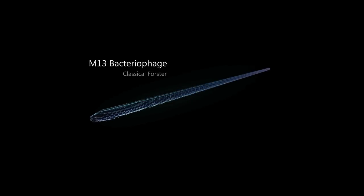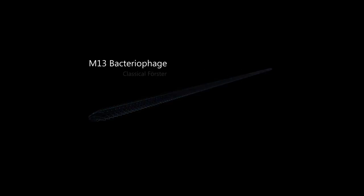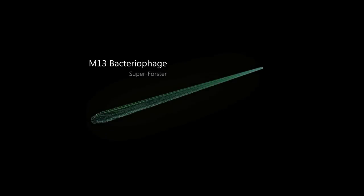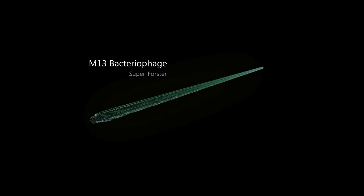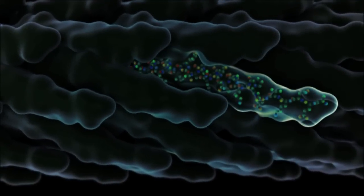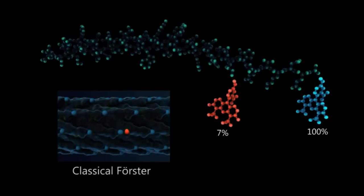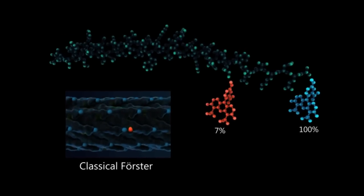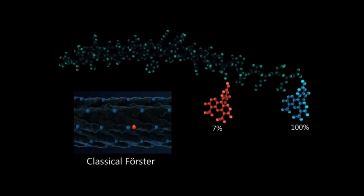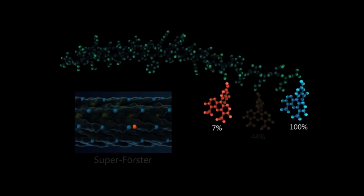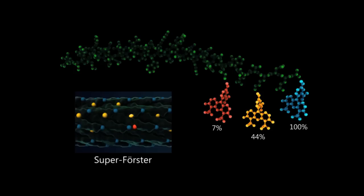One type is called a classical forester bacteriophage, and the second is a superforester or a quantum phage. We can go in and make modifications in the amino acid sequence such that these chromophores, or light-absorbing molecules, are at specific locations that are more optimal for energy transport along the length of the virus.